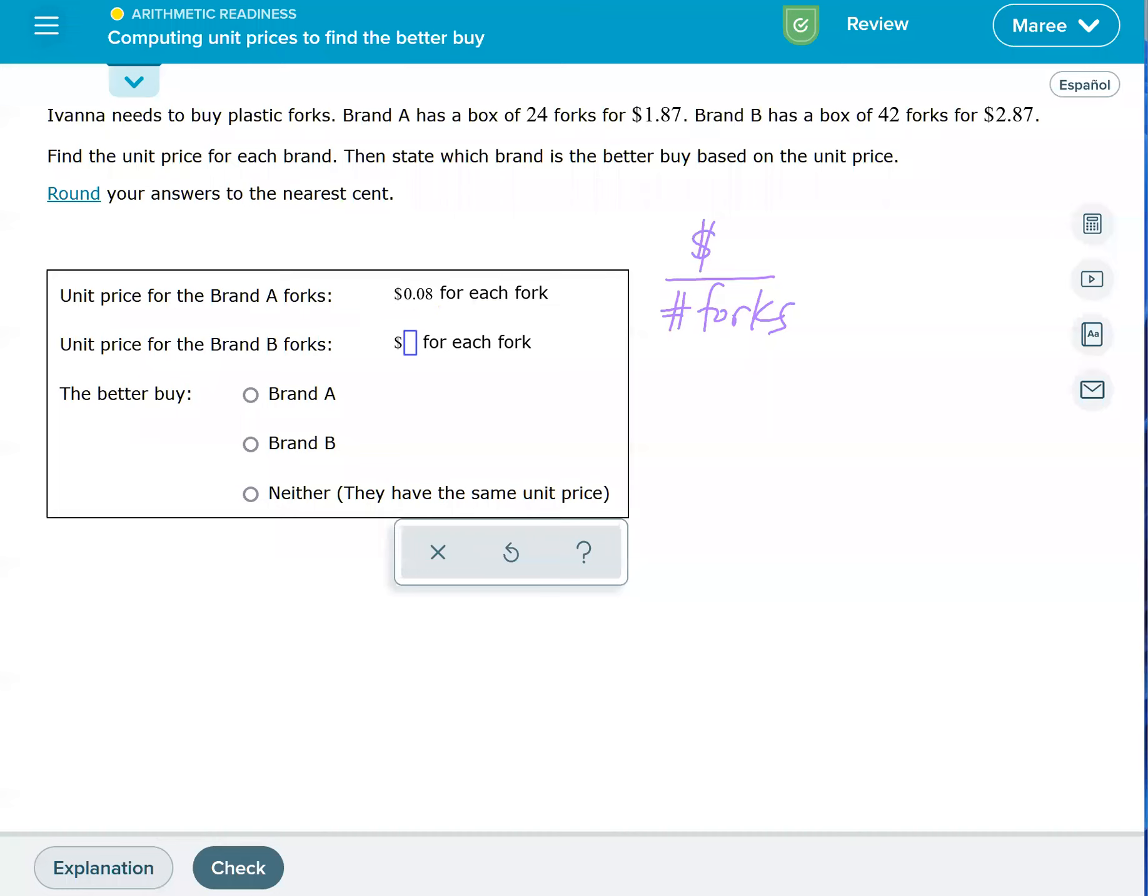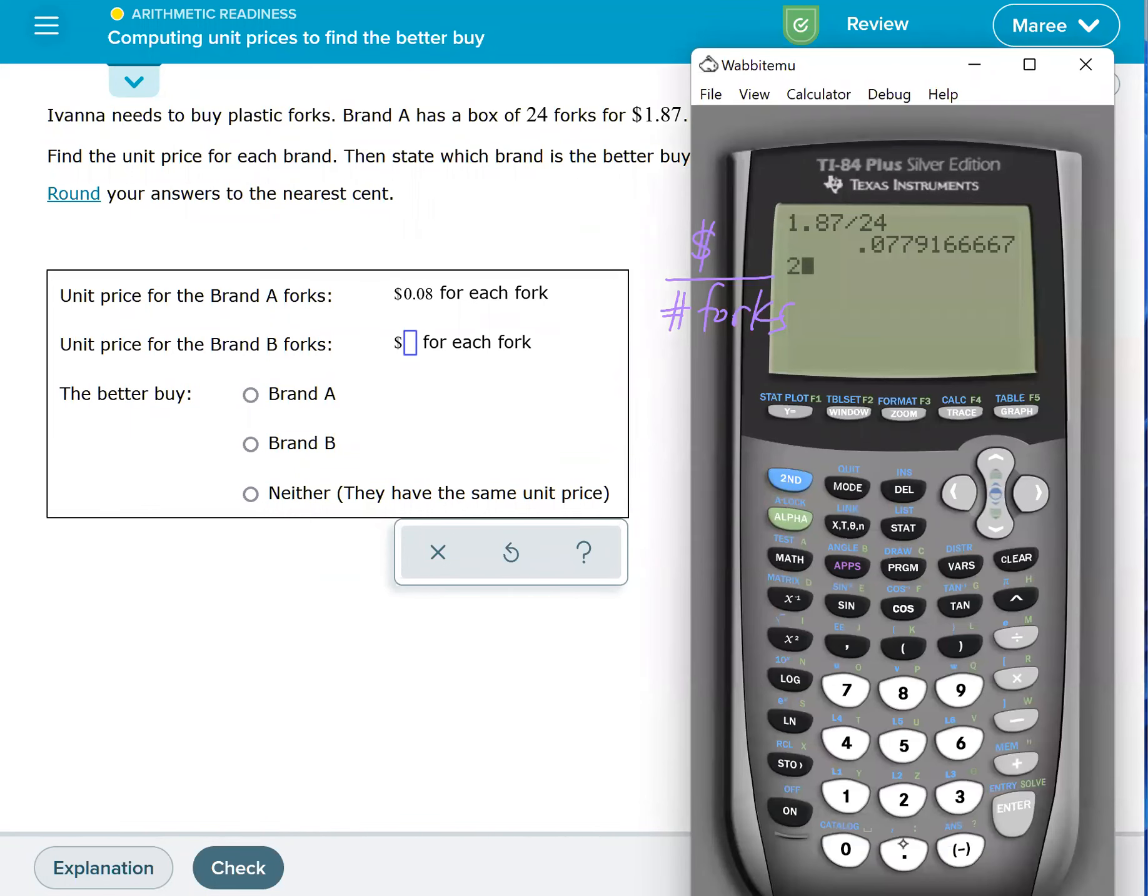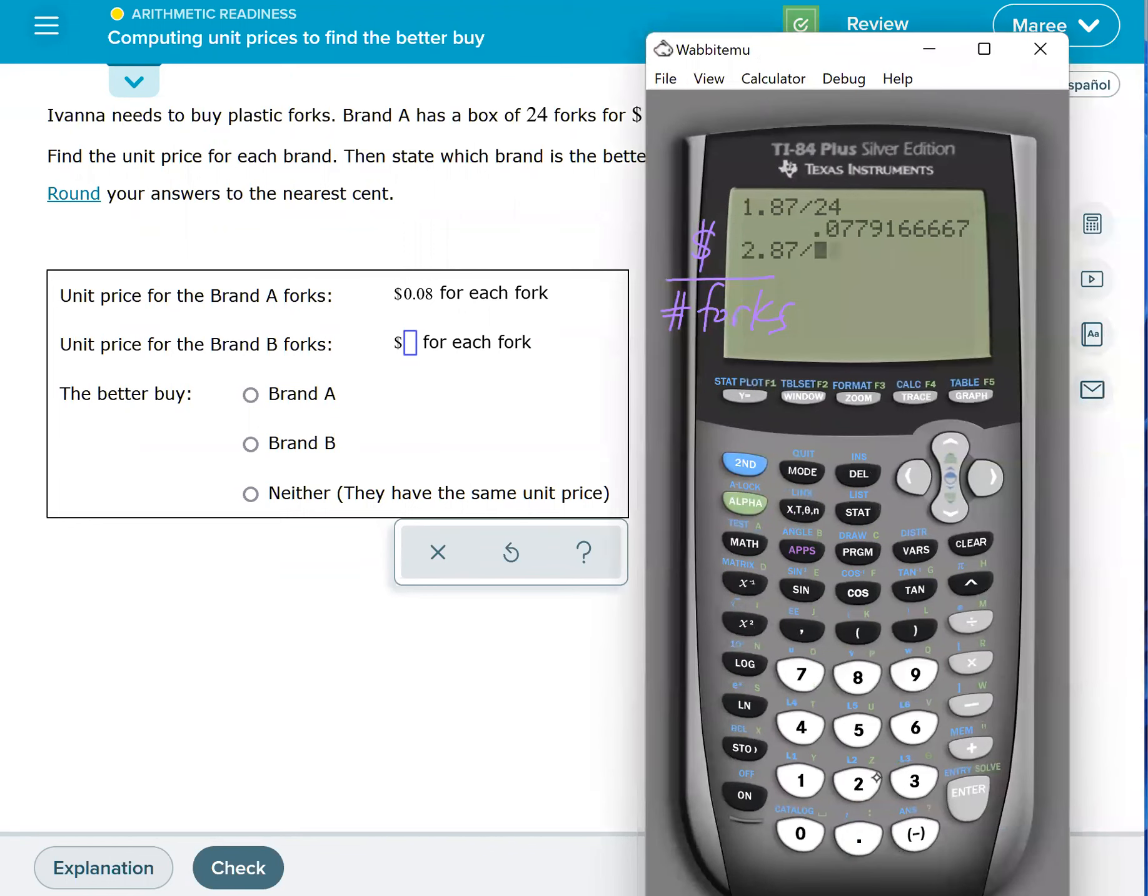take our Brand B, and we'll do $2.87 and divide it by—let's see, how many was it—42. And it's going to be about seven cents. See the 0.068 here, and